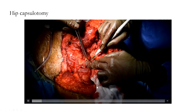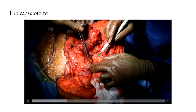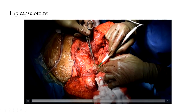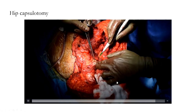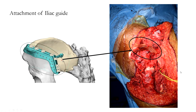Once the posterior dissection was completed, hip capsulotomy was performed to dislocate the hip joint and gain access to the ischium. Once the posterior ilium was completely skeletonized, anterior dissection was performed to push the pelvic and abdominal contents anteriorly. The cutting jig was then placed over the posterior aspect of the ilium, with the posterior iliac jig attached securely.